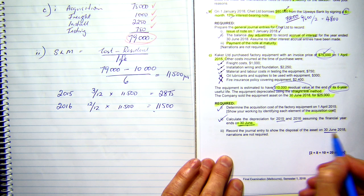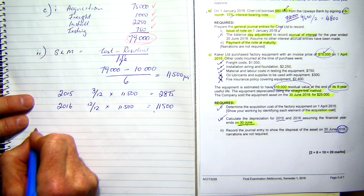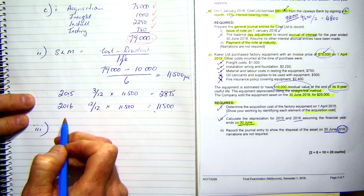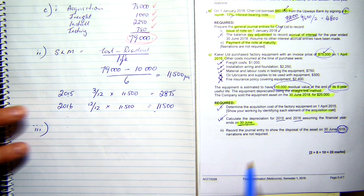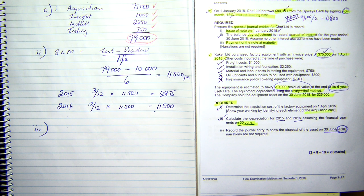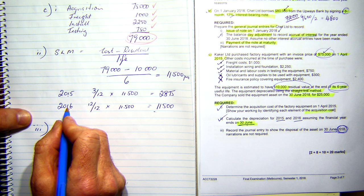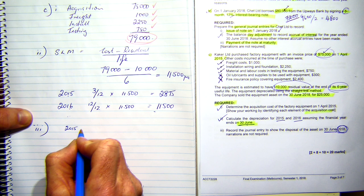Now, it says to record the journal entry to show the disposal of the asset on the 30 June 2018. So, I've got depreciation for 2015, 2016, 2017 and 2018. I'll have four depreciation periods. What have we got? I've got 2016, 2017, 2018. That's times three.